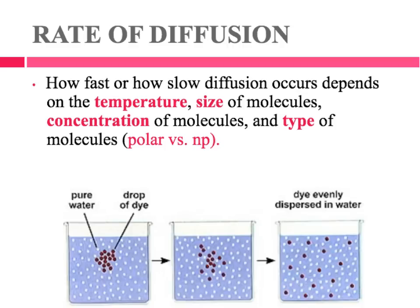This last part is just a little bit on the rate of diffusion — meaning how fast or slow diffusion is going to occur. The rate can be affected by temperature, the size of the molecules, the concentration of the molecules, and the type of molecules, whether or not they're polar or non-polar. I'll show a little example on Tuesday of temperature and rate of reaction when we're in class.